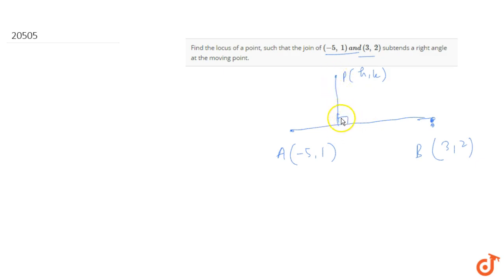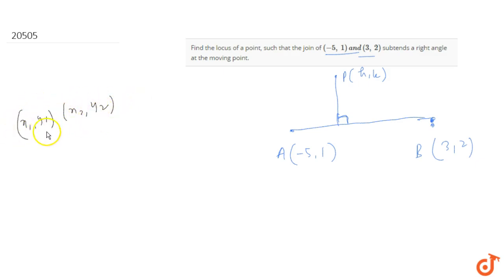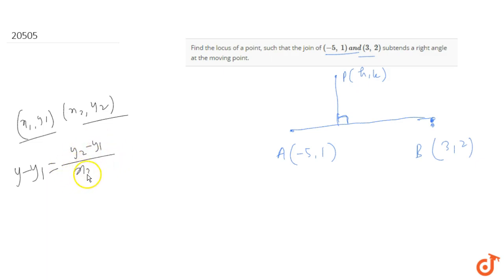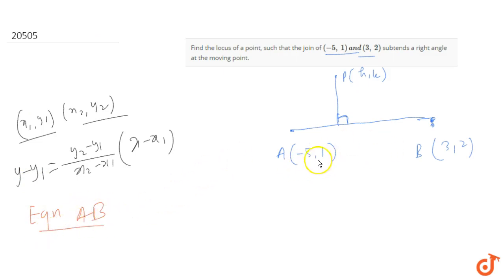First we need to find the equation of line AB. We know that whenever two points (x1, y1) and (x2, y2) are given and we want to find the equation of the line joining them, the formula is: y minus y1 equals (y2 minus y1) upon (x2 minus x1), times (x minus x1). Using the same concept we will find the equation of line AB.